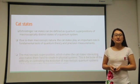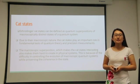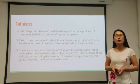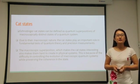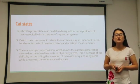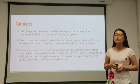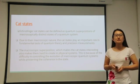Quantum systems are susceptible to interaction with the environment. Maintaining coherence in macroscopic quantum systems is even harder. Thus, the macroscopic superposition which makes cat states interesting also makes them almost impossible to create in large physical systems.